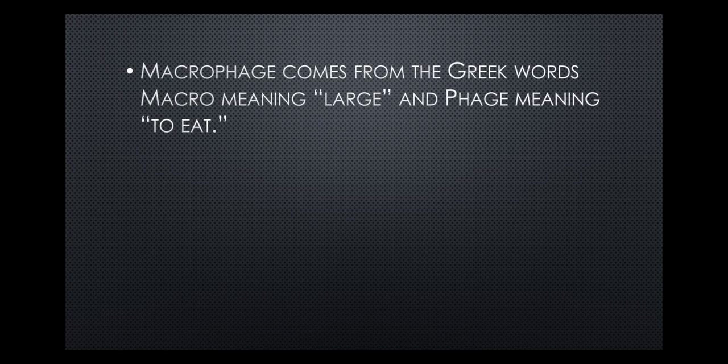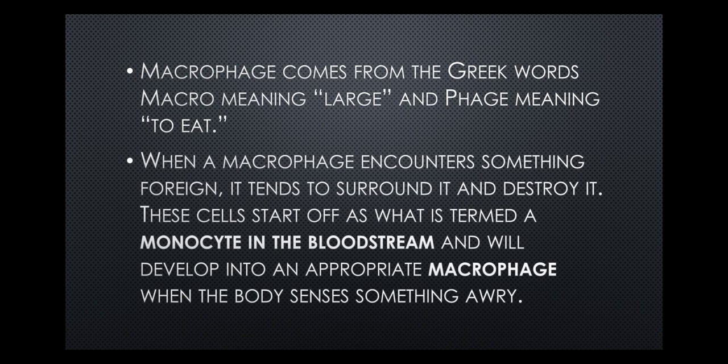Wonderful tiny little creatures spread across your body, designed to make sure that you remain healthy. Let us have a look at what these are and what they do. Macrophage comes from the Greek words macro meaning large and phage meaning to eat. When a macrophage encounters something foreign, it tends to surround it and destroy it. These cells start off as what is termed a monocyte circulating in the bloodstream and will develop into an appropriate macrophage when the body senses something is wrong.